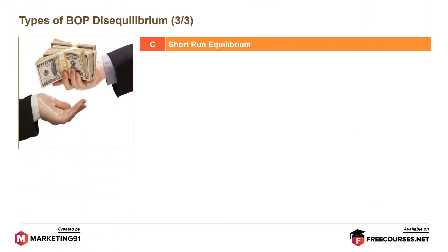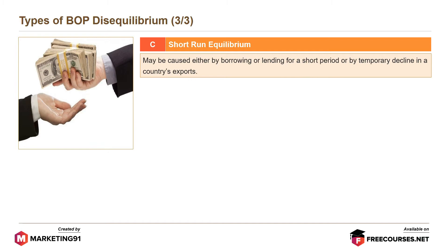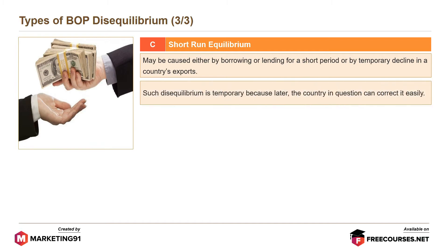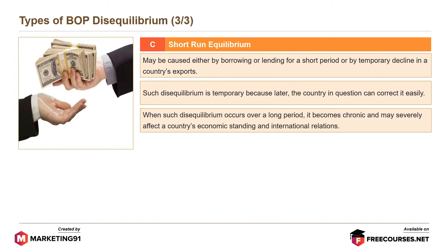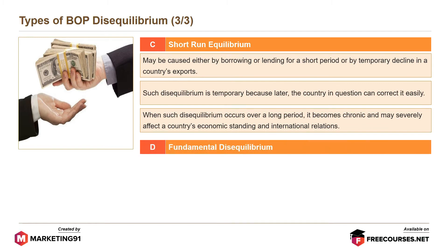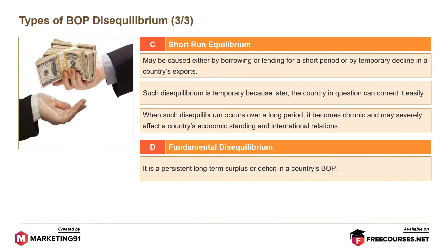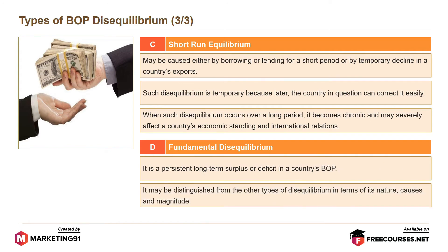Short-run disequilibrium may be caused either by borrowing or lending for a short period, or by a temporary decline in a country's exports. Such disequilibrium is temporary and can be corrected easily. However, when such disequilibrium occurs over a long period, it becomes chronic and may severely affect a country's economic standing and international relations. The last type is fundamental disequilibrium — a persistent long-term surplus or deficit in a country's BOP, distinguished from other types by its nature, causes and magnitude.